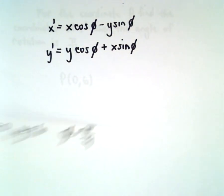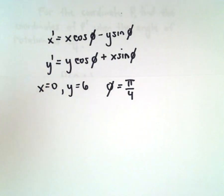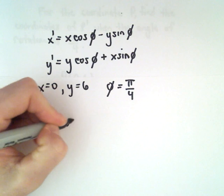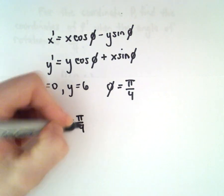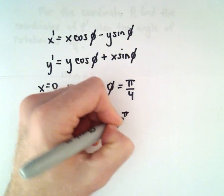So now it's just going to be a matter of just putting all those values in and simplifying. So x' will be 0 times cosine of pi over 4 minus y, which is 6 times sine of pi over 4.